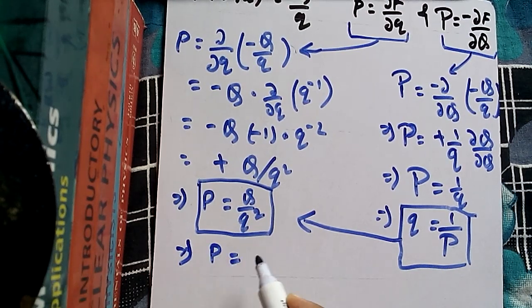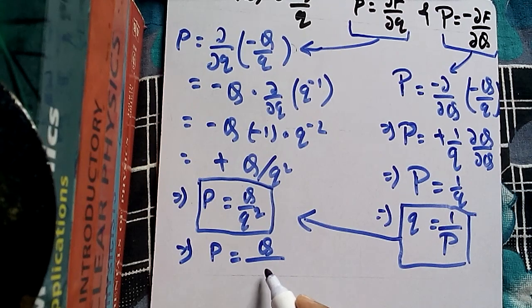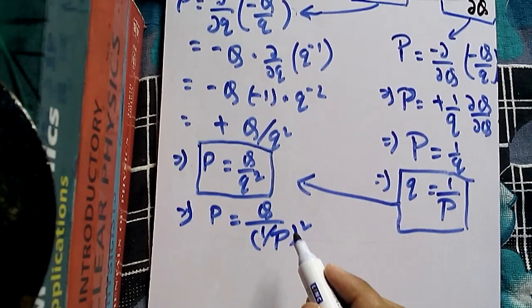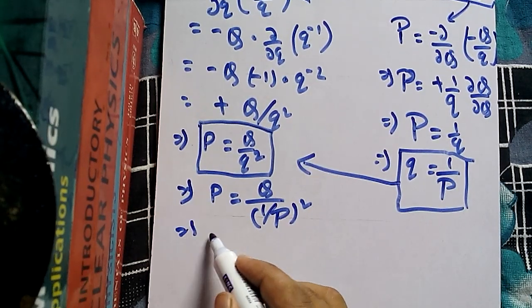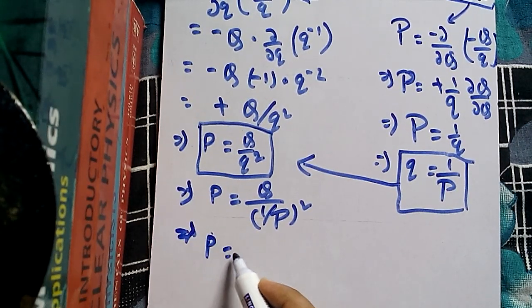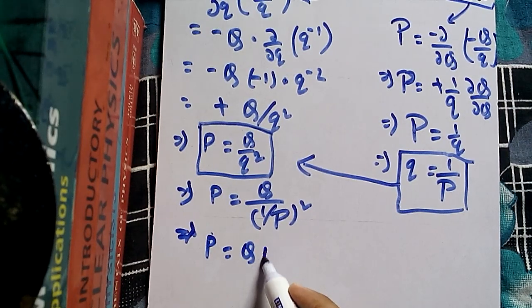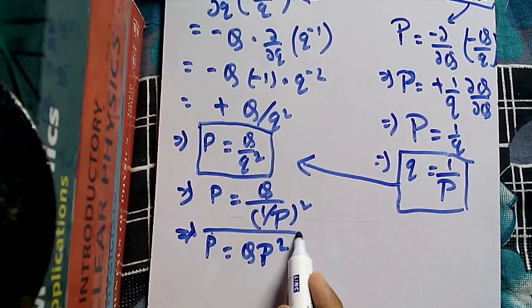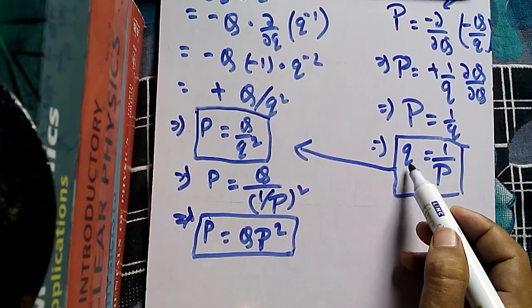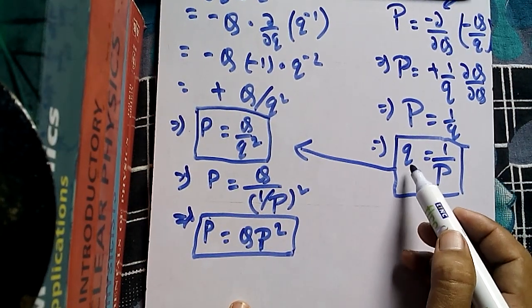Now substituting small q equals 1 by capital P into the expression for small p: small p equals capital Q divided by (1 by capital P) squared, which gives small p equals capital Q times capital P squared. So we now have both old variables expressed in terms of new coordinates.